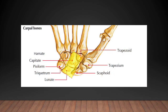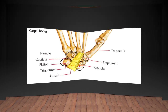Let's take a closer look at the carpal bones: Scaphoid, Trapezium, Pisiform, and Hamate. They give attachment to the transverse carpal ligament and form the bilateral borders.